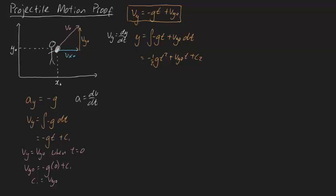So we need to realize that y is equal to y0 when t is equal to zero. Substitute this into here to solve for c2, and we're left with y0 is equal to minus a half g times zero squared plus vy0 times zero plus c2. These turn to zero, so c2 is going to be equal to y0.